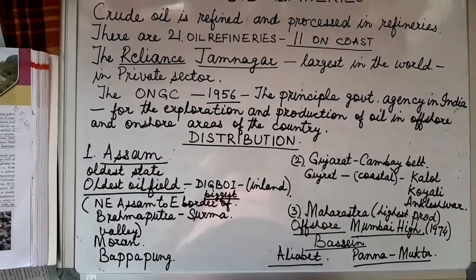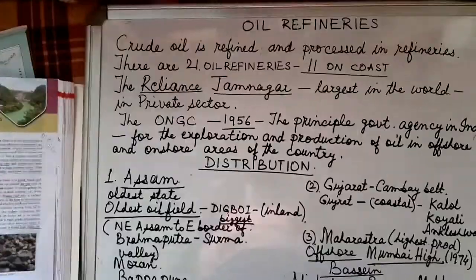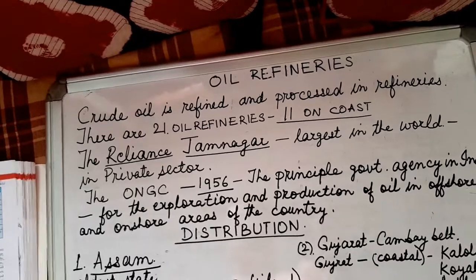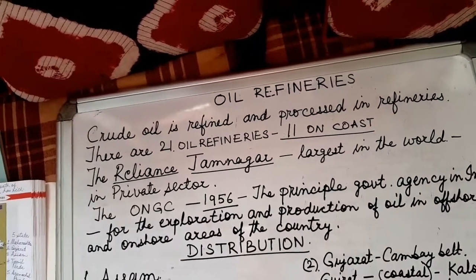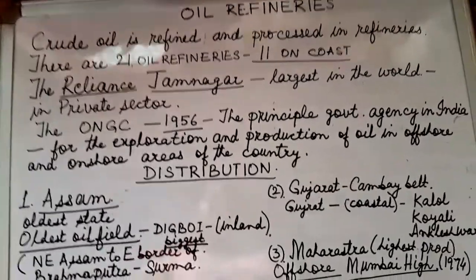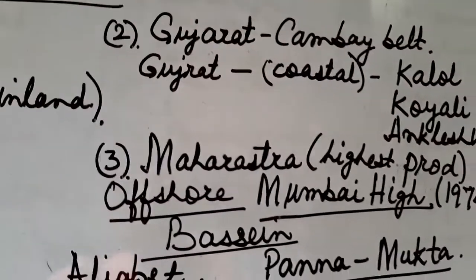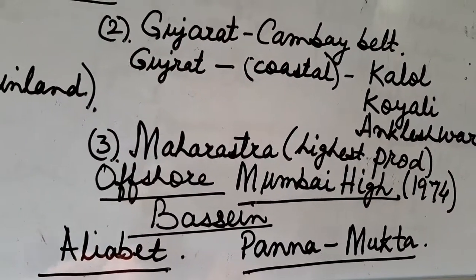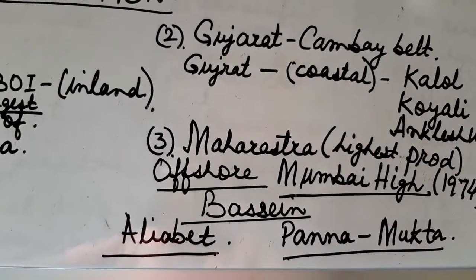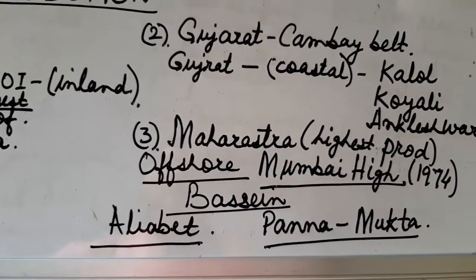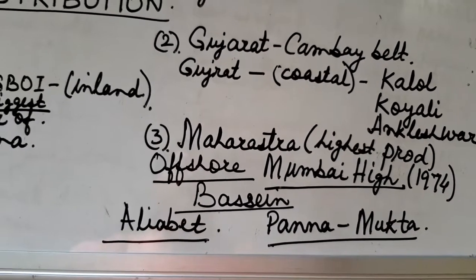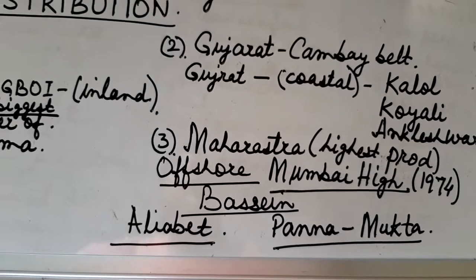Regarding the distribution of oil, there are five main states where crude oil is found in our country: Assam, Gujarat, Maharashtra, Tamil Nadu, and Arunachal Pradesh. Among these, Maharashtra produces the largest amount of crude oil, coming mainly from the Mumbai High oil field. There are three kinds of oil fields: offshore oil fields, onshore oil fields, and inland oil fields. Offshore oil fields lie on the continental shelf close to the coast.